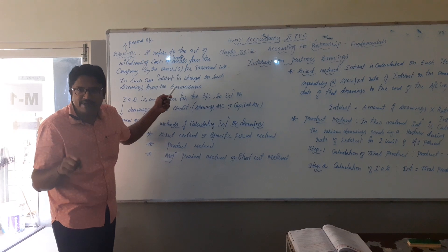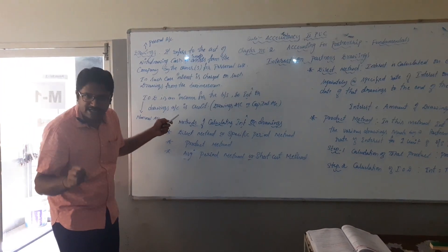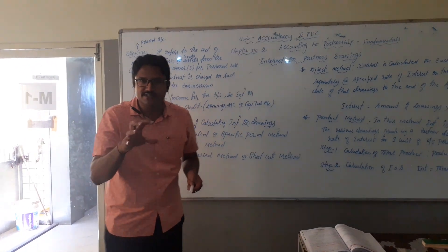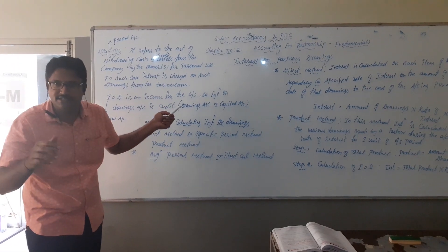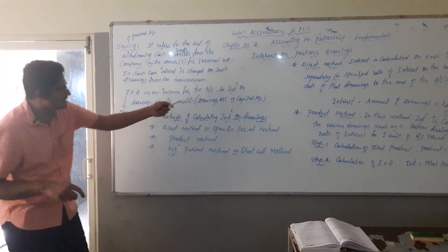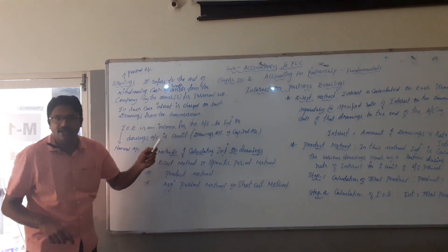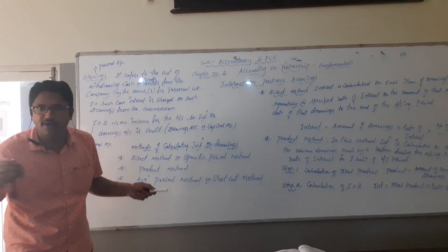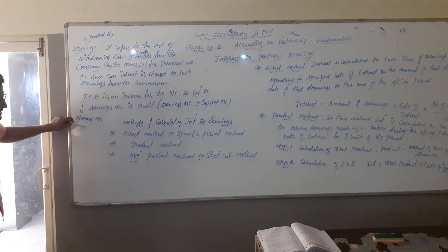The amount which the businessman or the partners withdraw from the business for personal purpose — for that the firm is going to charge interest. Interest for drawings is an income for the business, because the interest for drawings account is credited in the partner's capital or in the drawings account. Drawings is a personal account and interest for drawings is a nominal account.